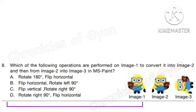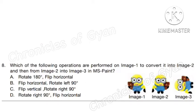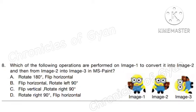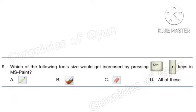Question 8. Which of the following operations are performed on image 1 to convert it to image 2 and then from image 2 into image 3 in MS Paint? Image 1 was first flipped horizontally to get image 2, and then image 2 was rotated left 90 degrees. So the correct option is B. Question 9. Which of the following tools' size would get increased by pressing Ctrl++ keys in MS Paint? Options A, B, and C can all be increased by pressing those keys. So the correct answer is option D: all of these.